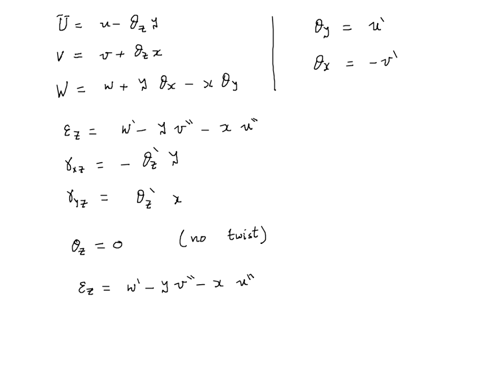The assumption of only sigma_z non-zero and only epsilon_z non-zero, these two assumptions are not mutually consistent because of Poisson's ratio, the Poisson effect. But the same as what happened with the plates, this assumption is good enough because essentially,